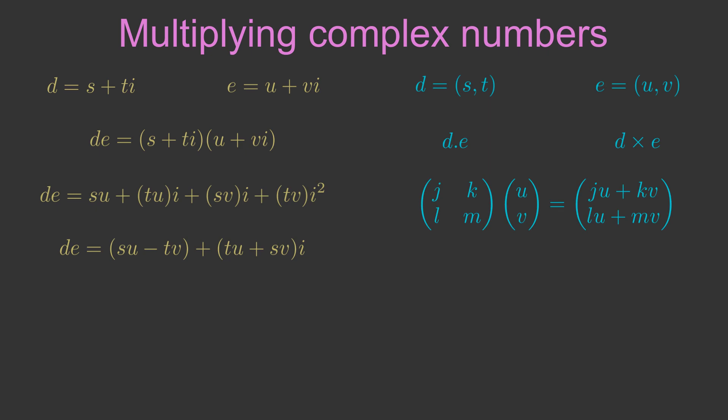The result is the vector ju plus kv, lu plus mv. Notice that the resulting vector has a similar form to the result of the complex number multiplication. Each part of the vector consists of a term in u and a term in v.